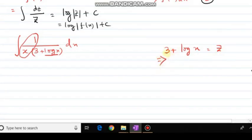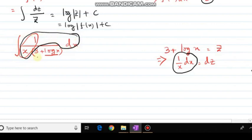From there, if I differentiate, ddx of 3 equals 0. ddx of log x will be 1 divided by x into dx, that is equals to dz, right? Now dx by x, that is my dz. This is my dx by x, dx divided by x, right?